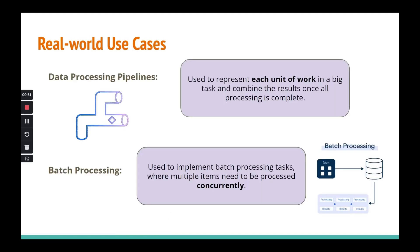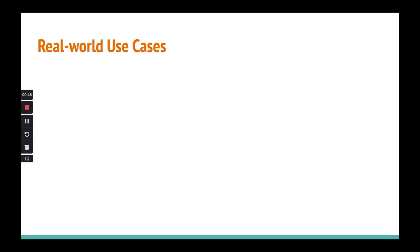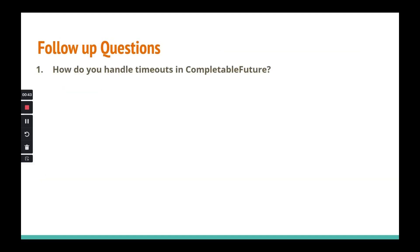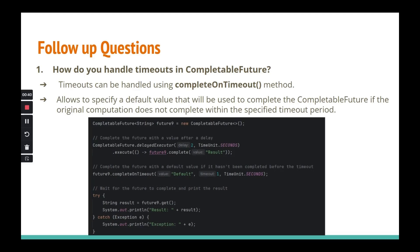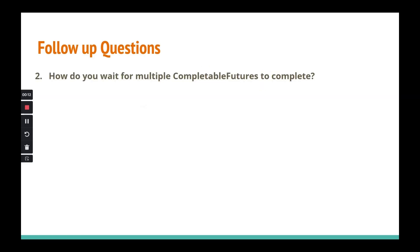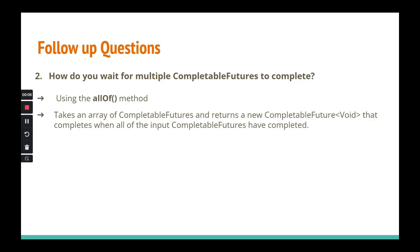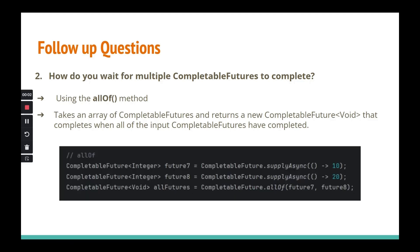Now moving on to follow-up questions. How do we handle timeouts? If your CompletableFuture is not completing within a set time — two minutes, five minutes, one hour — you want to return some default value. The method `completeOnTimeout` completes the future with a default value if the task hasn't completed within the timeout. You don't want to wait indefinitely. Next question: how do you wait for multiple CompletableFutures to complete? The answer is `allOf`, which we've already seen in practice.